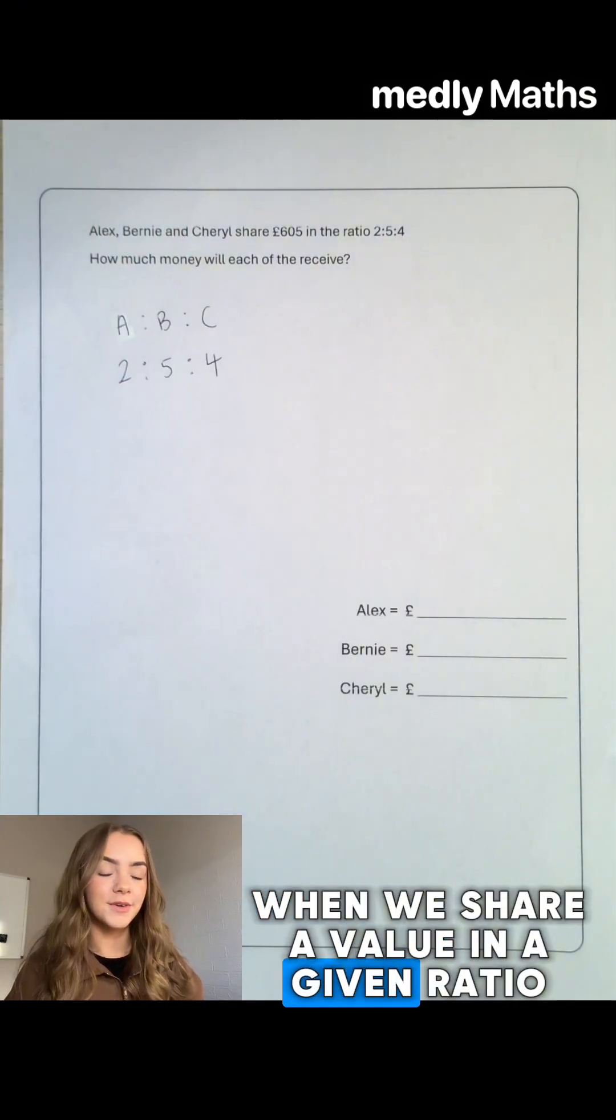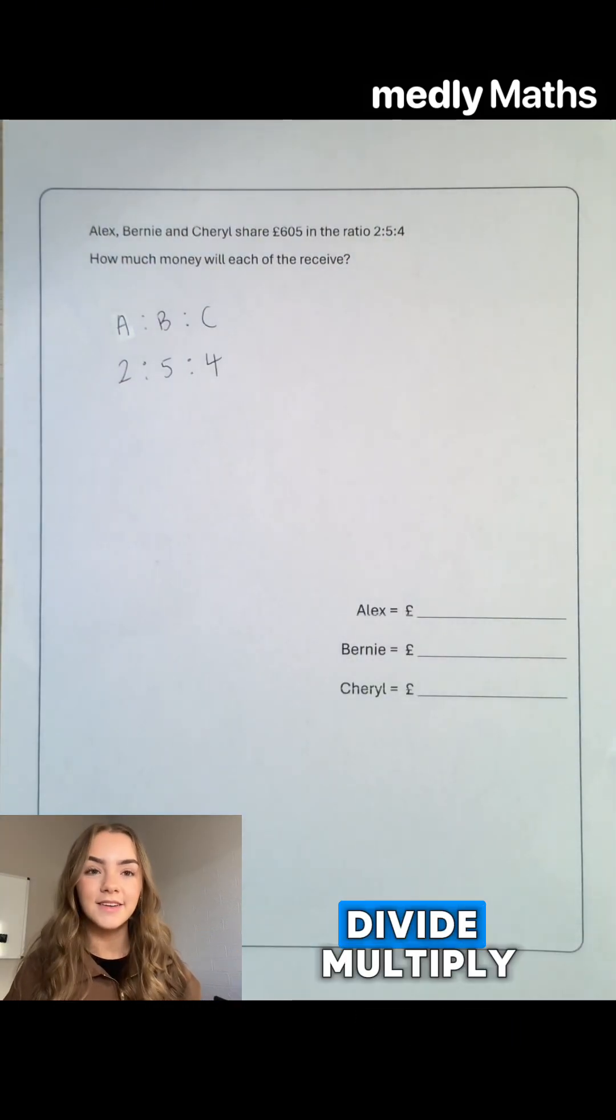When we share a value in a given ratio we do three steps and that is add, divide, multiply.